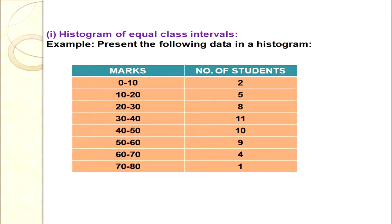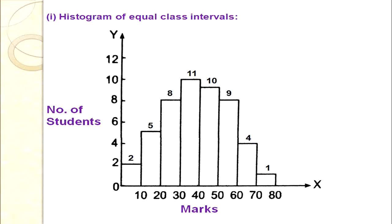For 0–10 the frequency is 2 — one bar drawn. For 10–20 frequency is 5 — another bar. For 20–30 frequency is 8 — another bar. For 30–40 frequency is 11 — another bar. Likewise all bars are drawn according to their frequencies. We observe that the lengths of the bars change according to frequencies, the width remains the same, and there is no distance between bars — these are the three key points for equal class interval histograms.